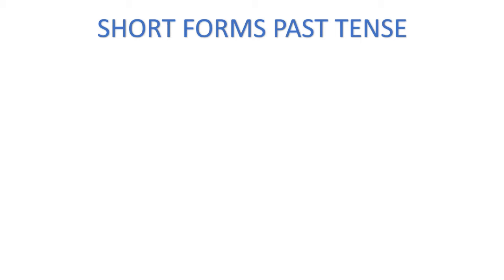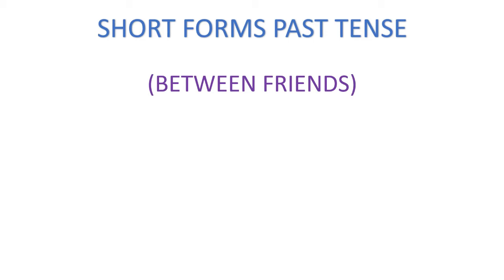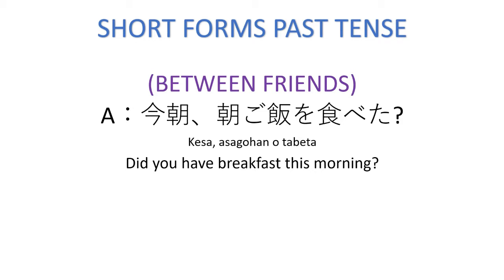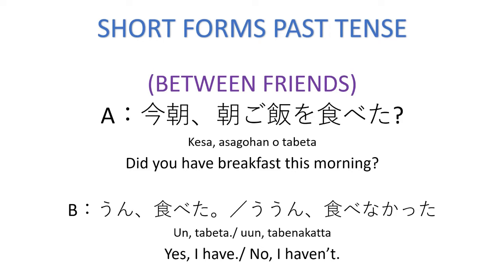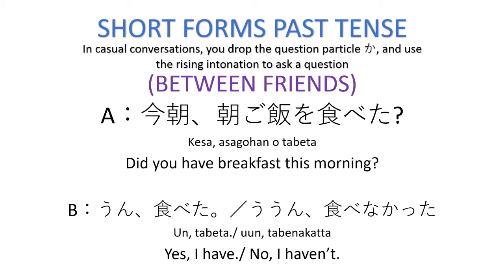For example, when friends talk with each other: 'Did you have breakfast this morning?' We have two answers, affirmative and negative. 'Tabeta?' — Yes, I have. 'Tabenakatta?' — No, I haven't. In casual conversations, we drop the question particle 'ka'. We do not say 'Tabeta ka'. Instead, we use the rising intonation to ask a question, just like in English.